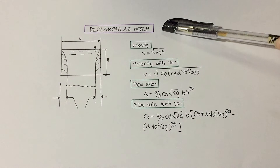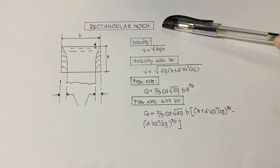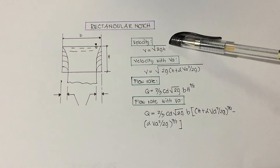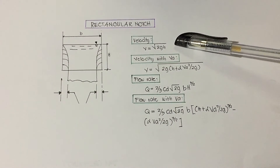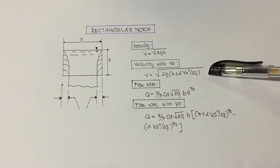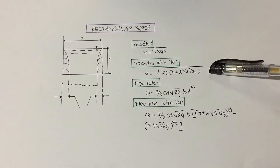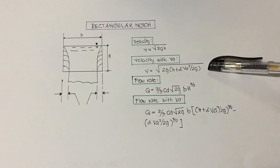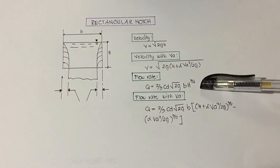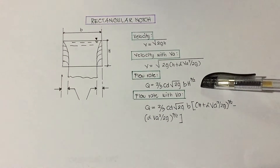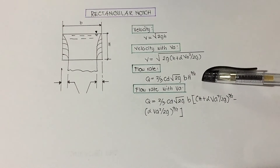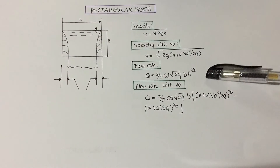The rectangular notch has a rectangular opening defined by its height and base. The formula for velocity is equal to the square root of 2gh. The formula for velocity with velocity approach is equal to the square root of 2g times the quantity of h plus the Coriolis coefficient times va squared over 2g. The formula for flow rate is equal to two-thirds times the coefficient of discharge times the square root of 2g times base times height to the power of three-halves.